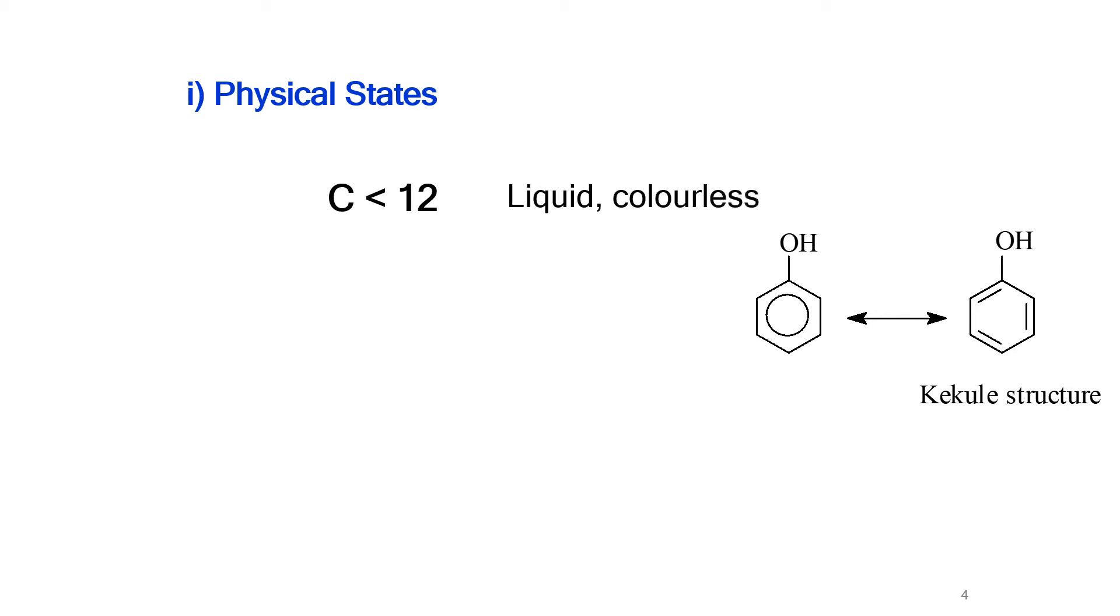For the alcohol which has less than 12 carbon, it exists as a liquid and colorless. For the alcohol which has greater than 12 carbon, it exists as solid. For the phenols, all the phenols are colorless and exist as liquid.